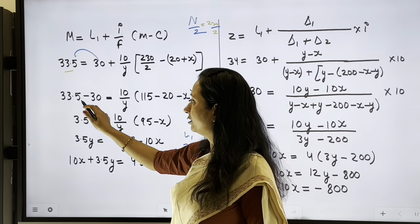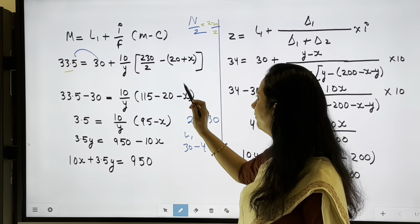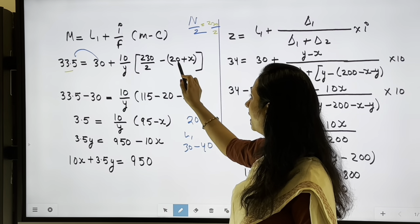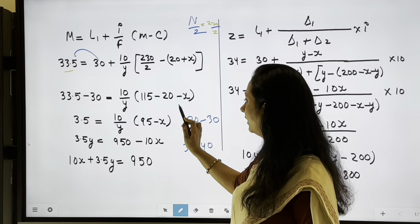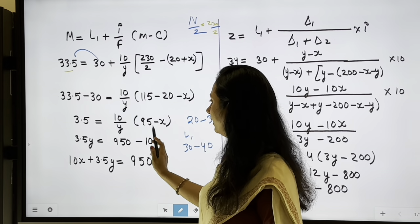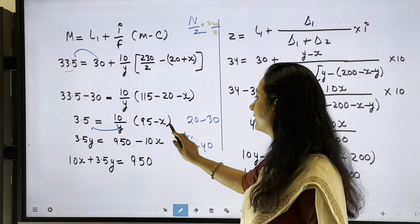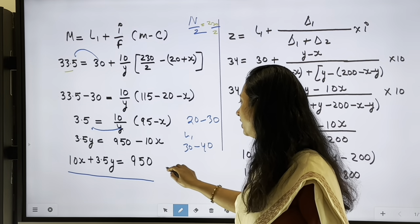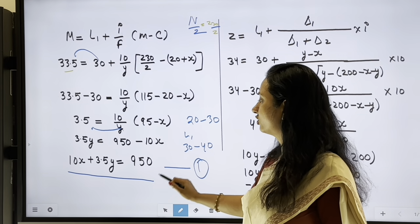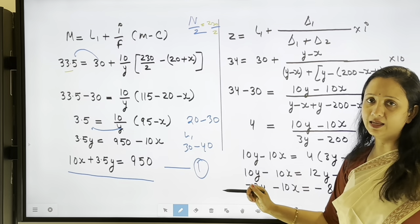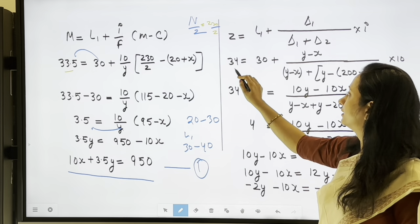Transferring 30 to the left side: 33.5 minus 30 = 3.5. Expanding the bracket gives minus 20 and minus x. Solving gives 95 minus x on one side. Multiplying through by Y and rearranging yields Equation 1: 10x + 3.5y = 950. This equation comes from the median.